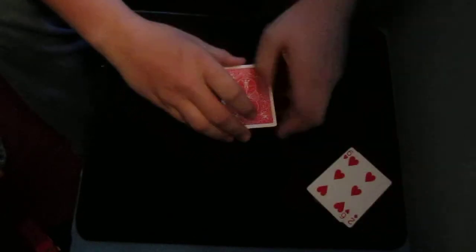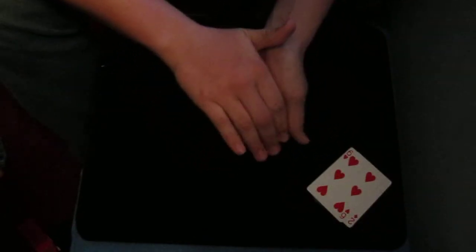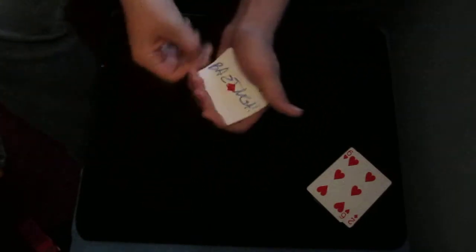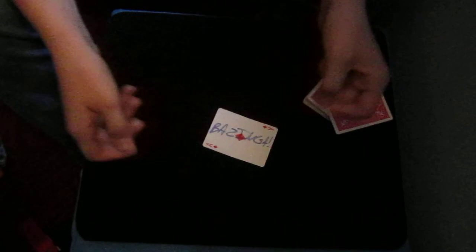Now see, all we have to do is take this card, the Jack of Clubs, pass it through my fist just like that, and maybe pass through again, and it instantly changes to your Bazinga. Thanks.